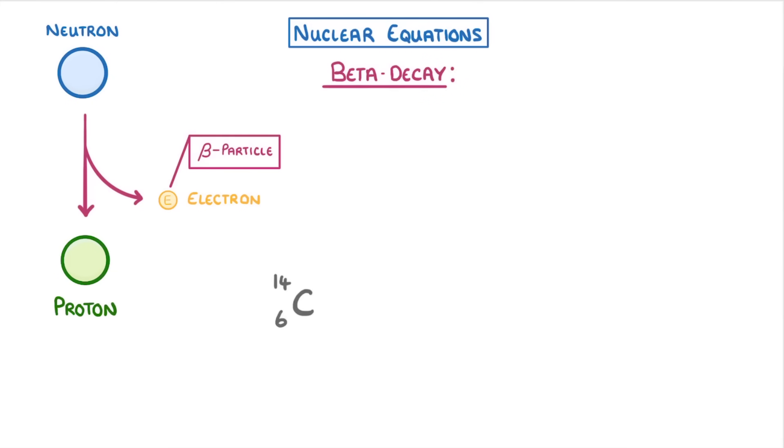So if carbon-14 was to decay and emit one of these electrons, then because it's effectively gained a proton, its atomic number would increase from 6 to 7, making it nitrogen rather than carbon. However, its mass number would stay the same, because although it's gained a proton, it also lost a neutron, so it still only has a total of 14 protons and neutrons in its nucleus.